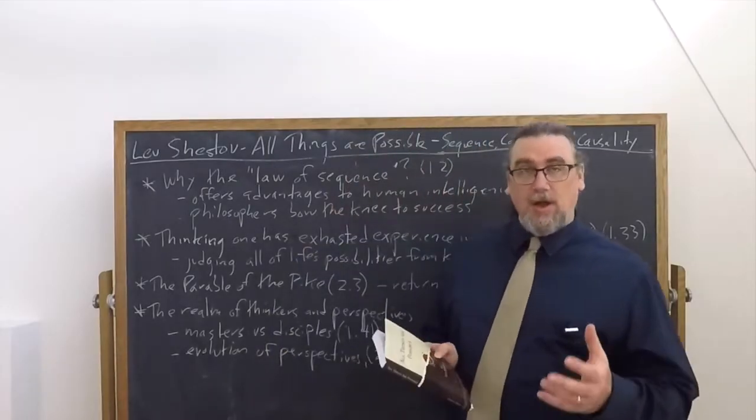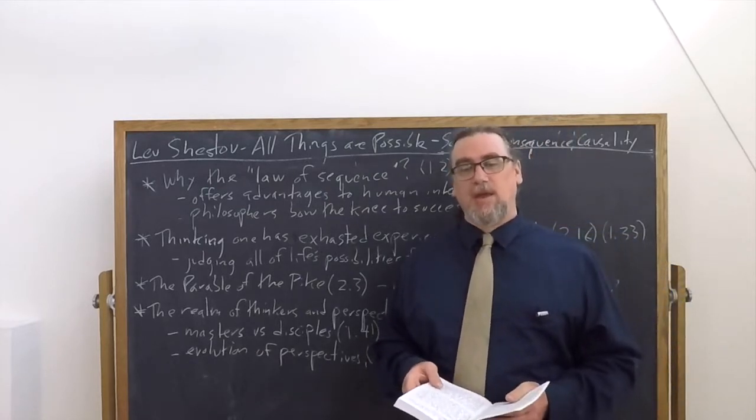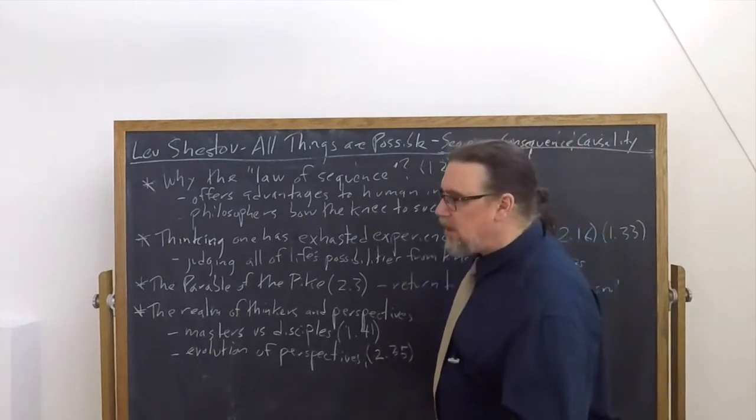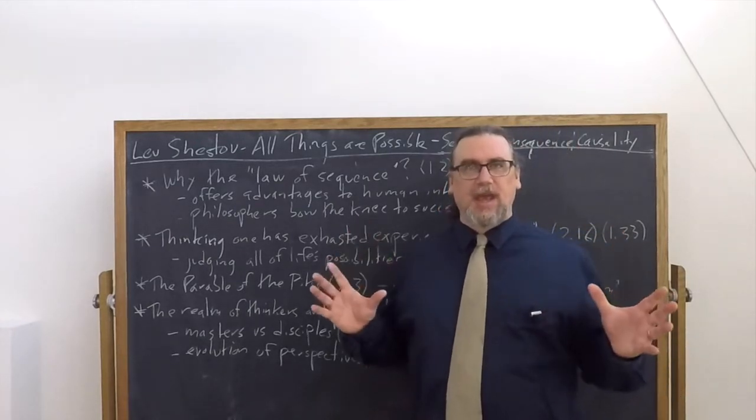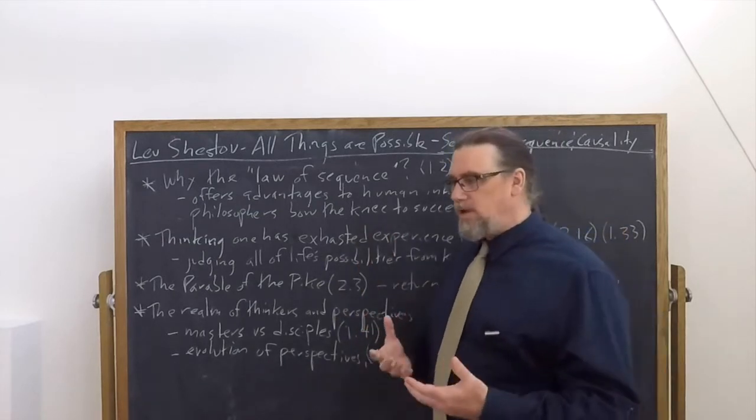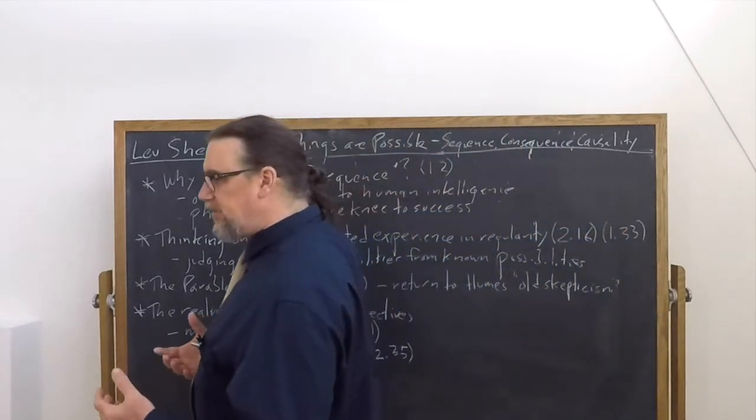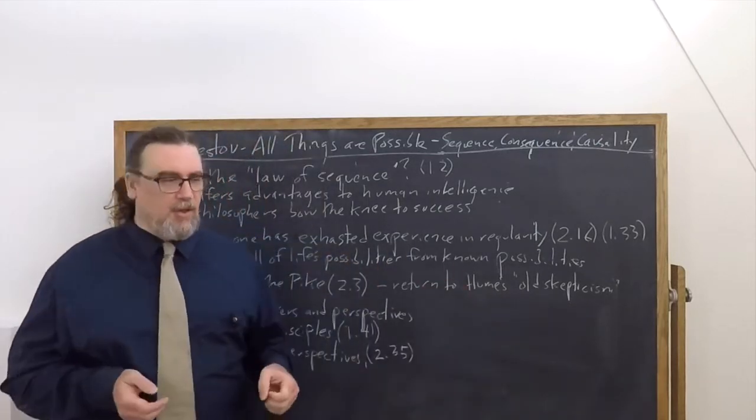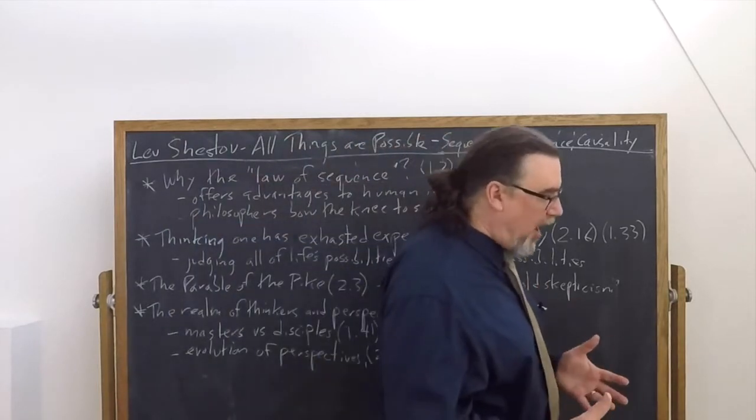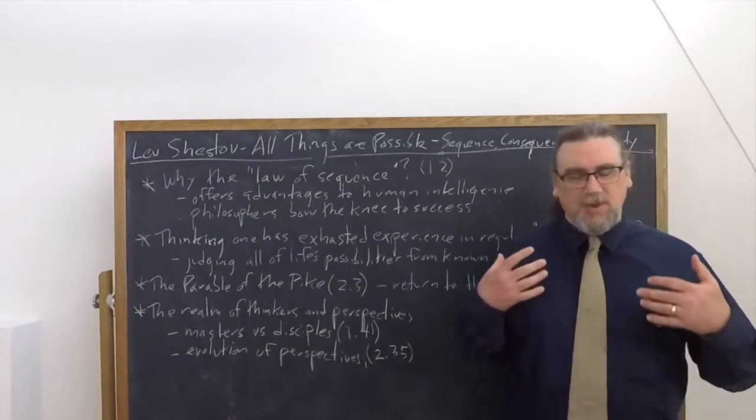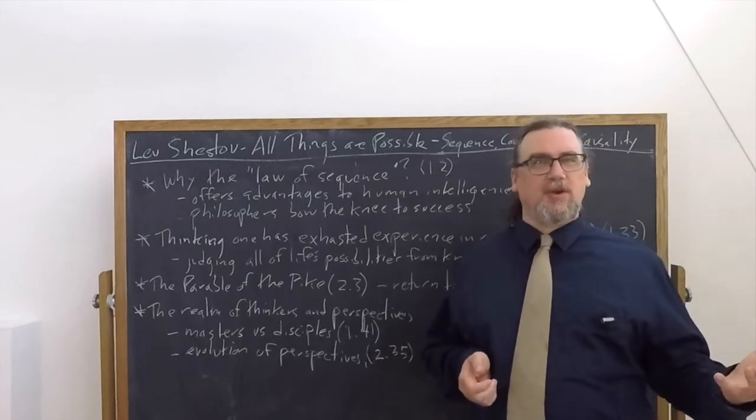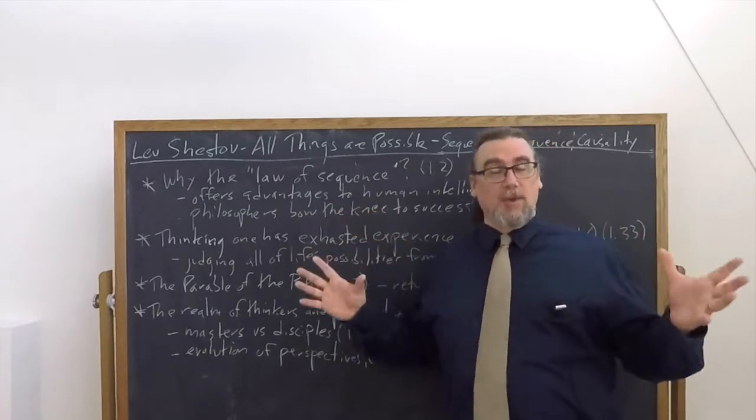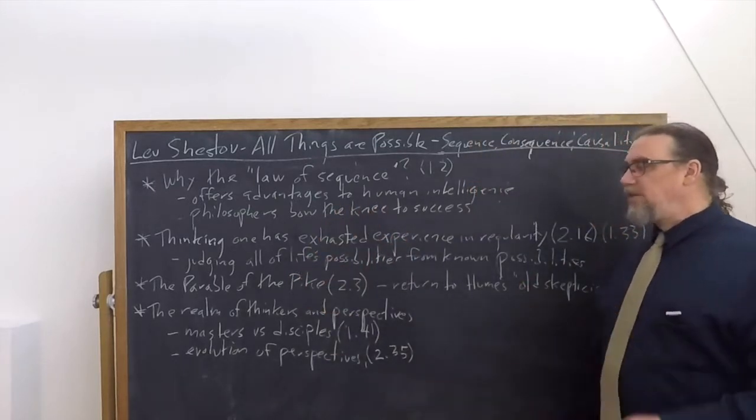Very early on in All Things Are Possible, Lev Shestov is going to speak of the law of sequence in natural phenomena, and that is a stand-in for causality. One of the things that modern philosophy, particularly in modern philosophy they were concerned about, is causality as an issue. We see this in David Hume and his considerations of cause and effect, and then in Kant, who's responding to Hume.